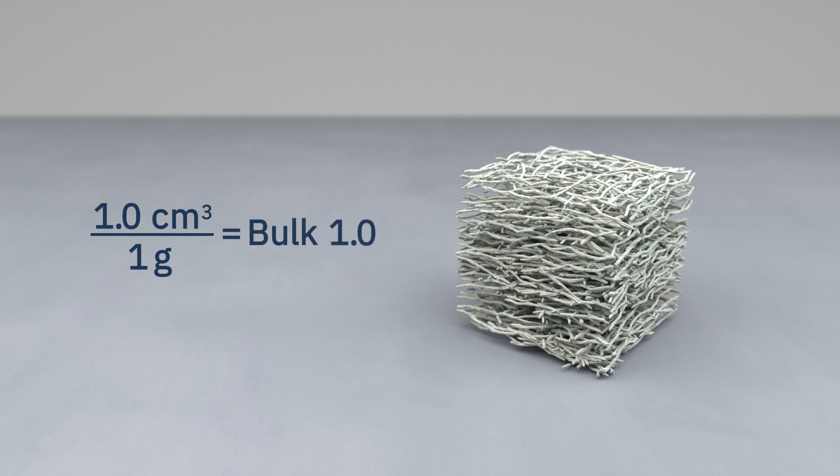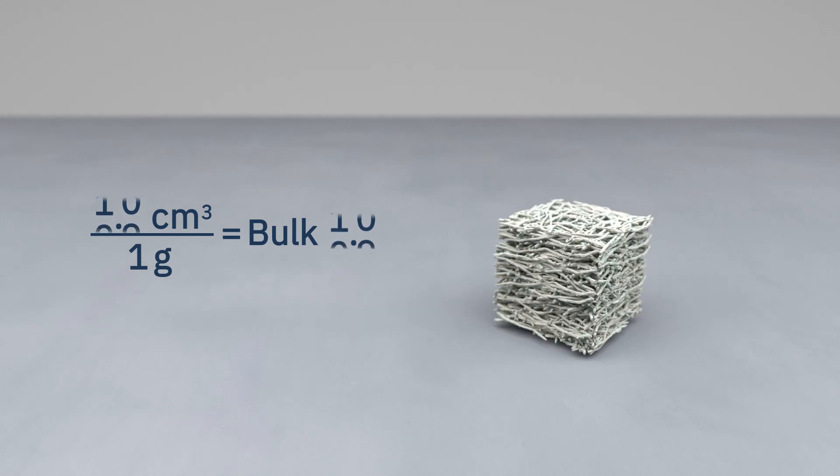Bulk is the reverse of density. A paper with higher density has a lower bulk value, meaning it's more compact.